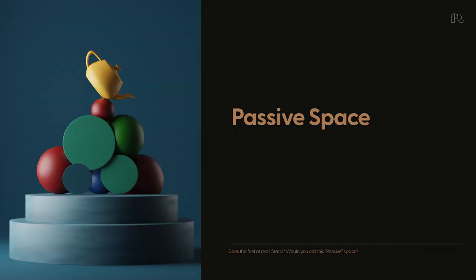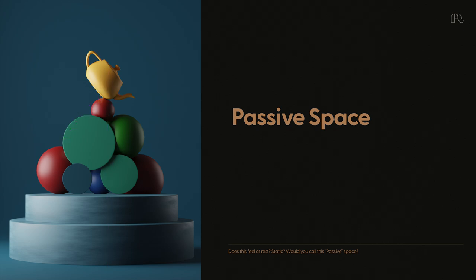Consider this next example. Everything here, apart from the platform, is not symmetrical, but the focal point is somewhere around here, centered up vertically. The image is not leading my eye anywhere else — it's right here, at rest.